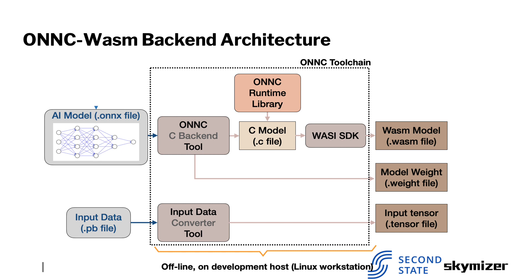Next, let's talk about the Onyx Watson backend architecture and how we generate Watson bytecode from an AI model. A pre-trained AI model contains neural network information including operators, layer attributes, model weight, and bias. First, the Onyx compiler will compile an AI model into C source files. The C backend will convert AI operators into function codes which are defined by the Onyx runtime library. Besides, the C backend will split model weights into separate files.